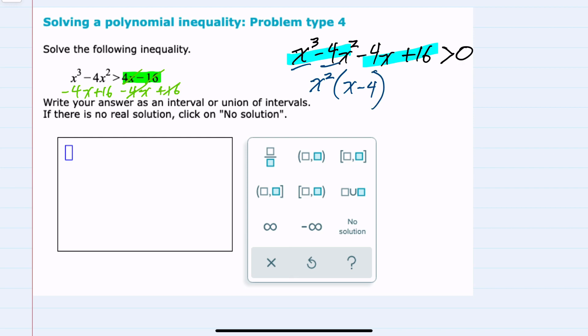And then for this second piece, I've got minus 4x plus 16. Here, I could factor out a minus 4 from the first term. That would leave me with just an x. And then factoring out a minus 4 from 16 would leave me a minus 4. And now I have two x minus 4s.